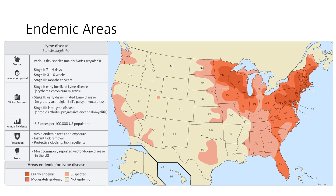Lyme is carried by ticks, and these ticks like to hang out on deer as well as on humans and pets like dogs. They're found in forested areas where the deer population is higher, which happens to be along the coastlines. New Jersey is actually our most Lyme endemic state, and the surrounding areas of Connecticut, Massachusetts, and New York are also very highly affected by Lyme disease.